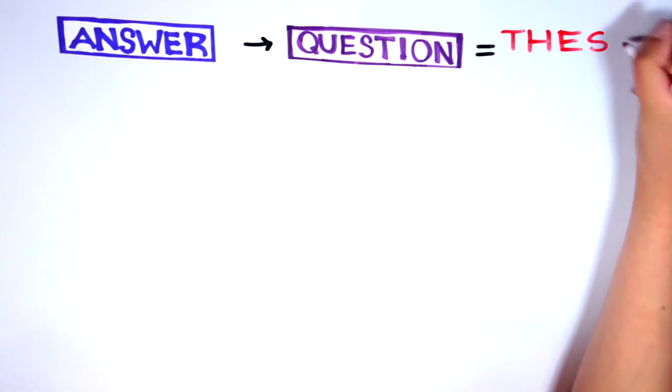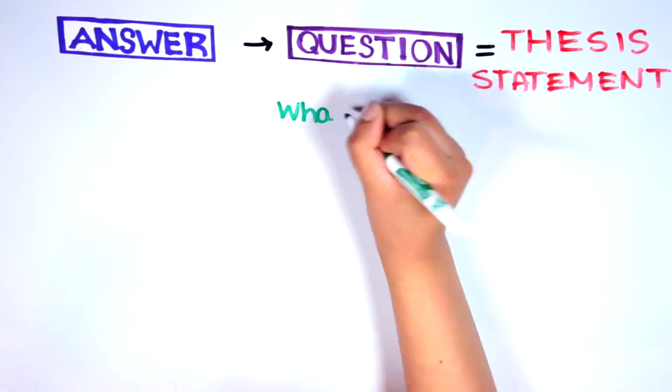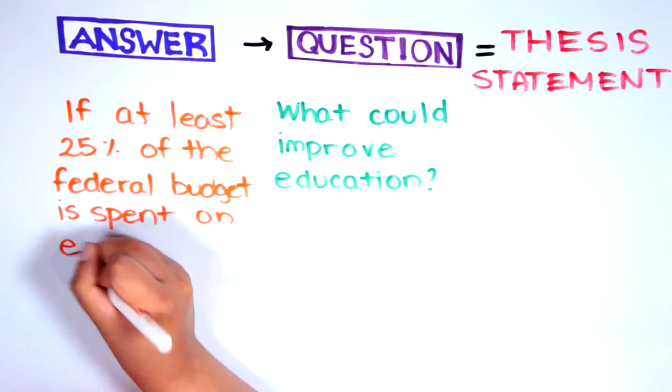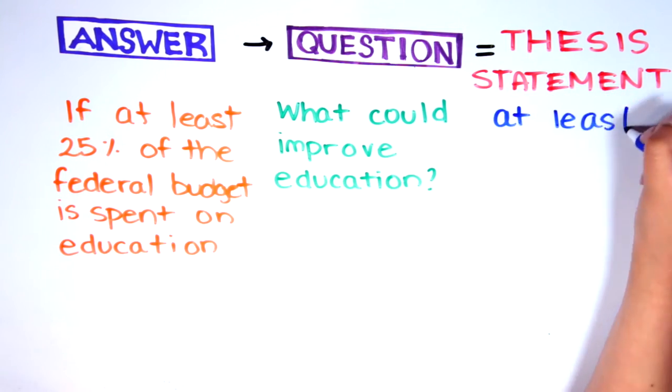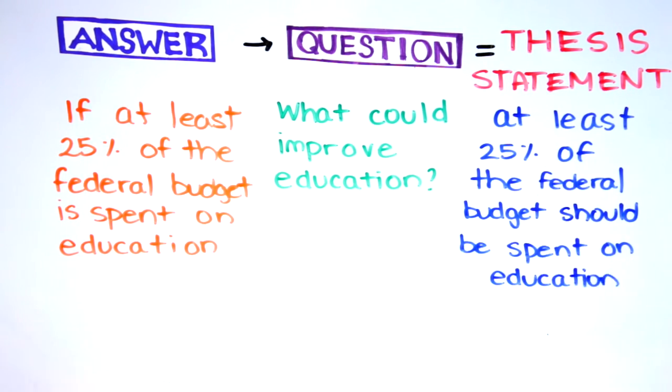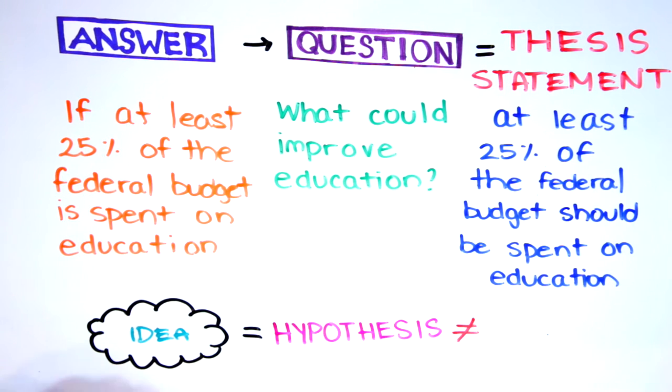For example, a question is, what could improve education? The answer is, if at least 25% of the federal budget is spent on education. This makes the sentence, at least 25% of the federal budget should be spent on improving education. Base your ideas on evidence and treat them as hypotheses to be tested rather than obvious truths.